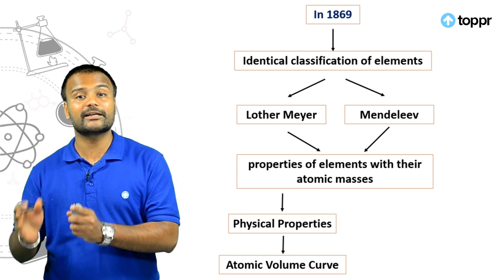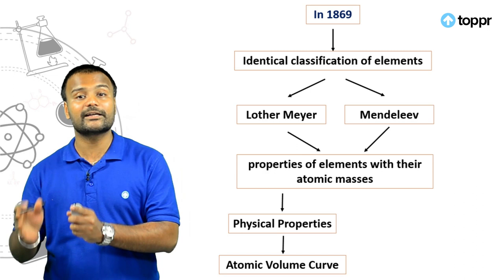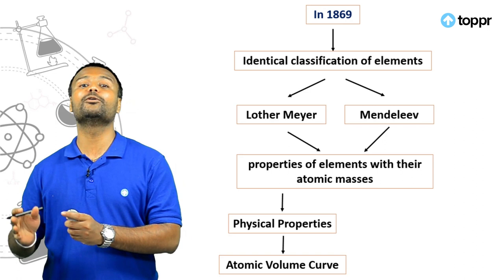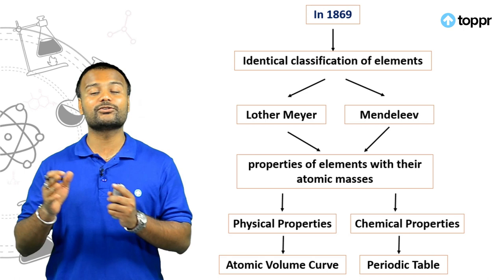But what is the difference between them? Lother-Meyer worked only on the physical properties of elements and named it the Lother-Meyer atomic volume curve, whereas Mendeleev focused completely on the chemical properties of elements and named it the Mendeleev periodic table.